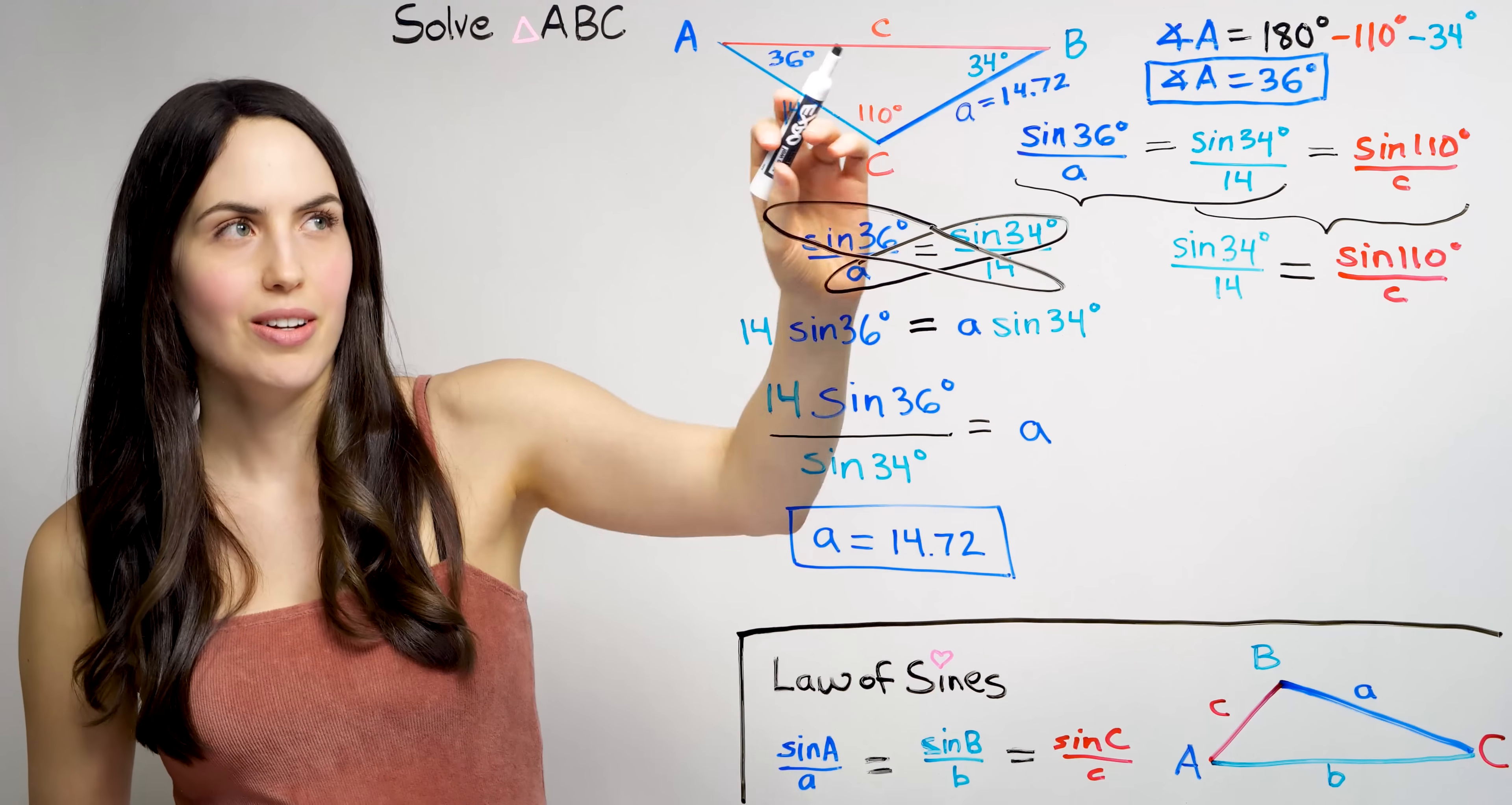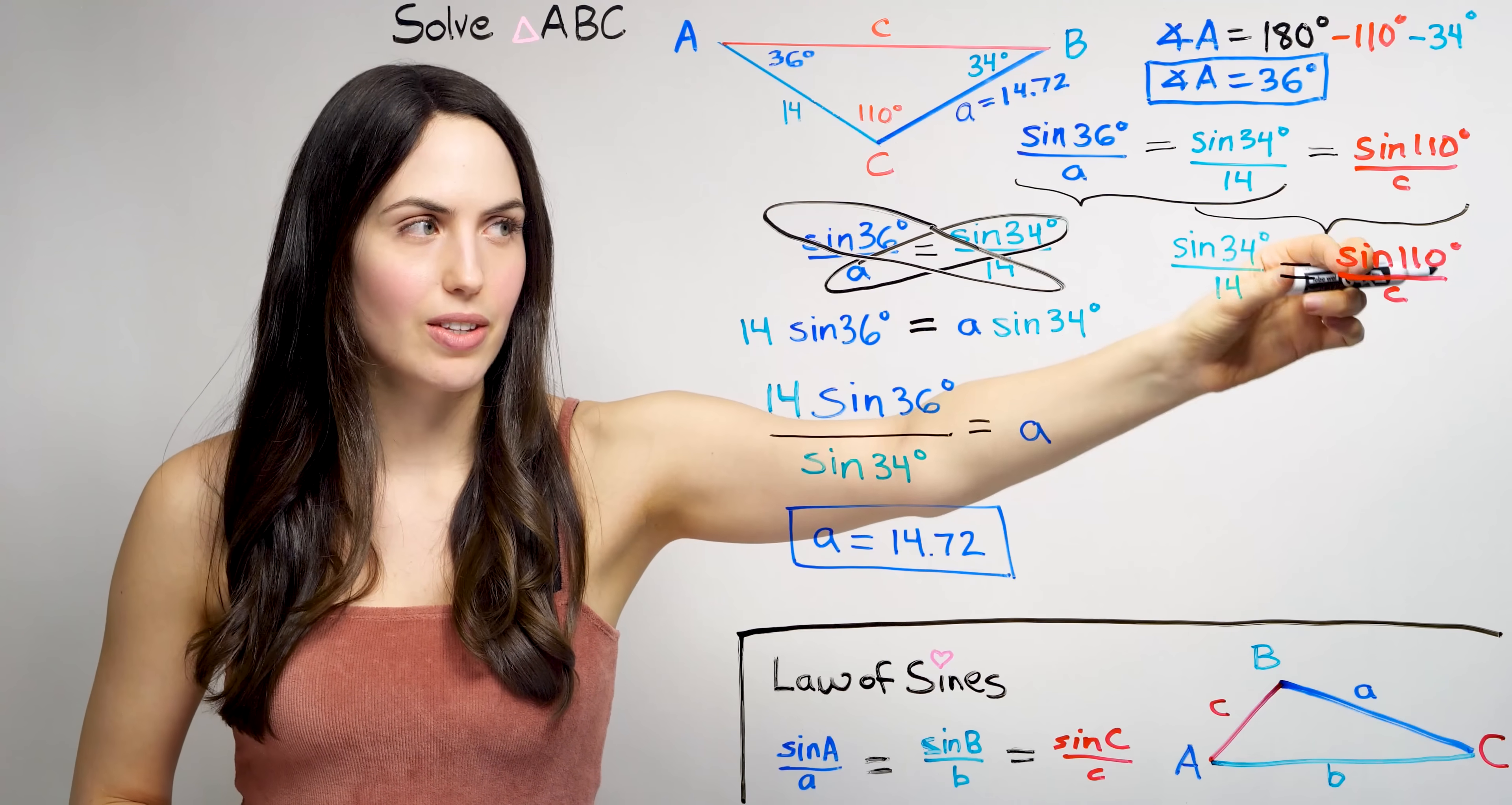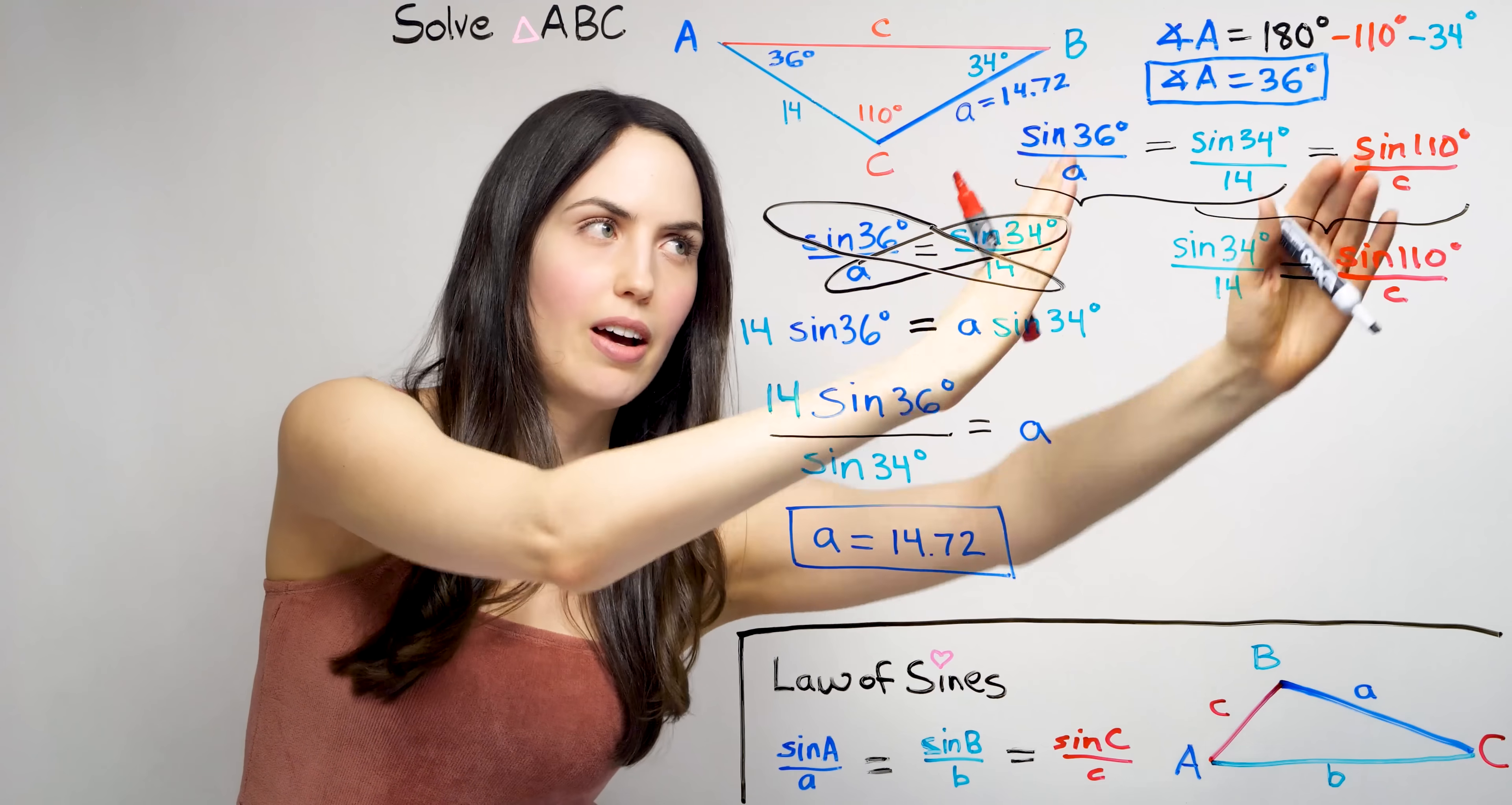Just one more unknown to find. I skipped ahead, but you might have already guessed it. Yeah, we can use another part of this, a different pair of ratios to solve for C. And it might not always be so neatly this half, then use that half.